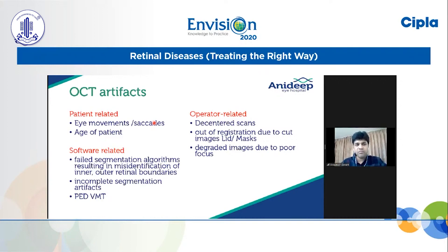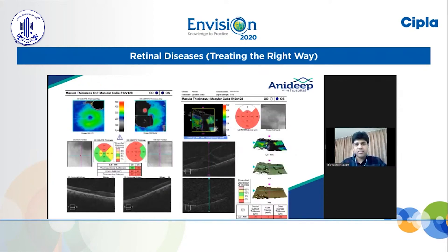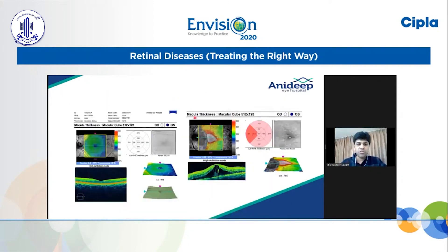Patient-related artifacts are due to eye movements and also the age of the patient. Software-related causes include failed segmentations and incomplete segmentations in cases of a large PED or large VMT. Operator-related causes can be decentered scan, out-of-registration due to lid drooping, or in COVID times the mask being too high leading to a decentered scan, or a degraded image due to poor focus. A typical example is a PSC cataract where the image is present but values cannot be depended upon because a large area is not captured. A patient with VMT and dispersed vitreous opacities again shows values that cannot be relied upon.